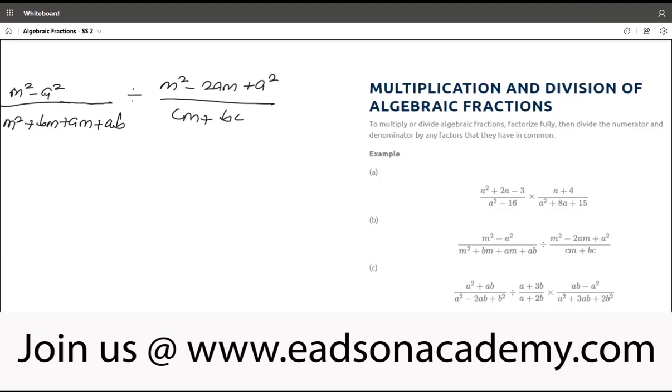The numerator here is difference of two squares. If I apply the rule there, that will be m plus a times m minus a all over. Now, this I'm going to group it 2 by 2. If we group it 2 by 2 here, m will be common.